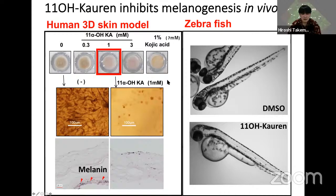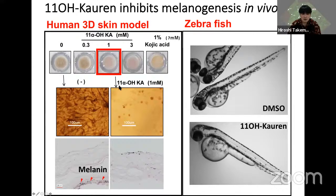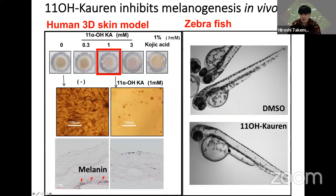To examine whether kaolenic acid is efficient in vivo, we first used a human 3D skin model. This model requires a high amount of compound, so we used 1 mmol of 11-hydroxykaolenic acid. At 1 mmol this compound completely inhibits melanogenesis — melanin is found in the basement membrane normally, but no melanin was found in treated samples. Using zebrafish, we also found anti-melanogenic activity of 11-hydroxykaolenic acid, with decreased melanin content.